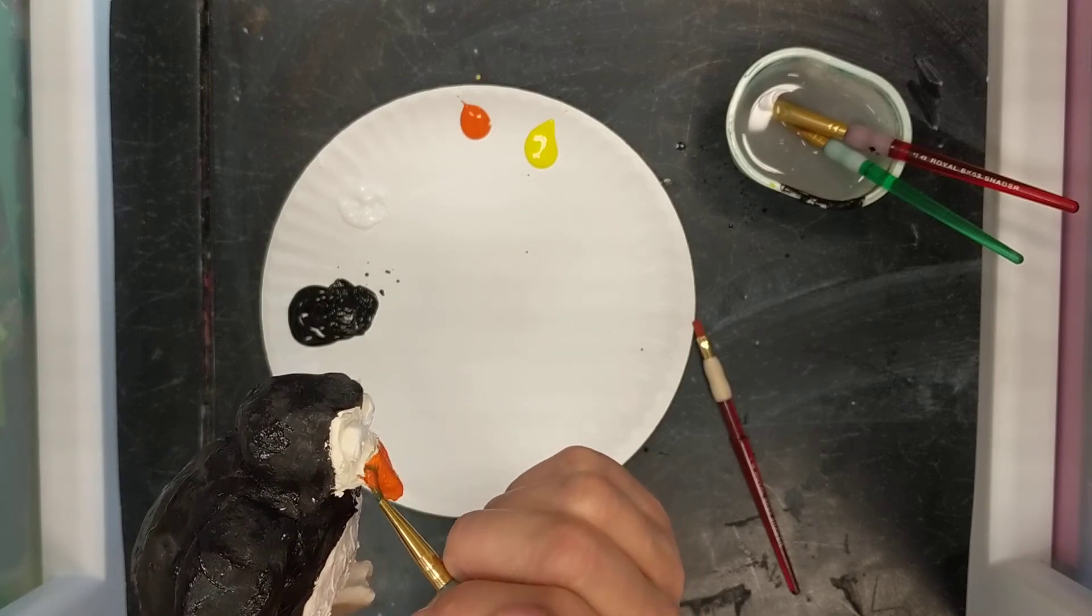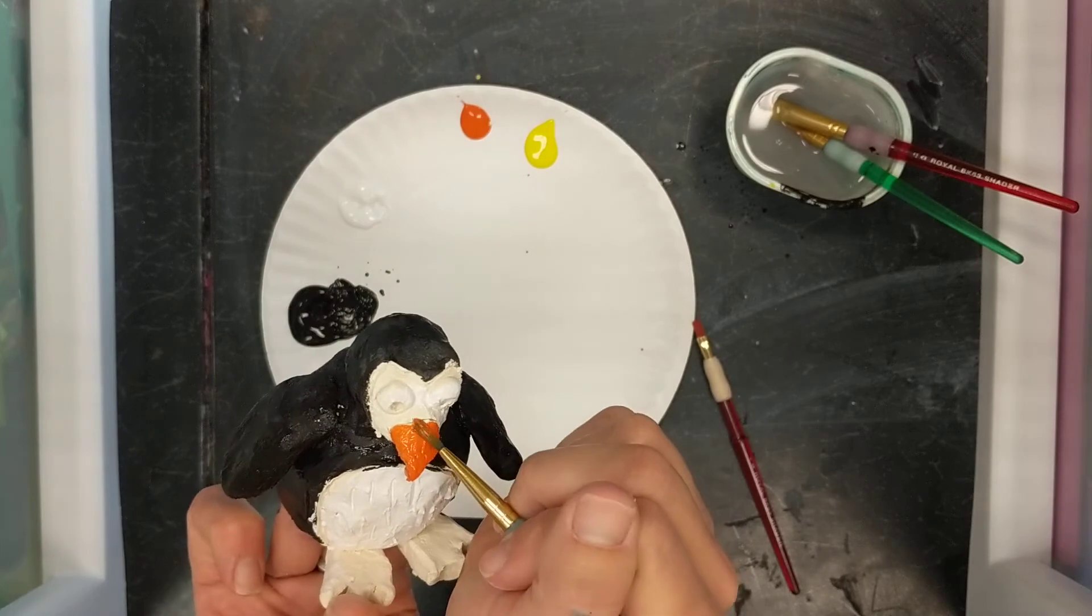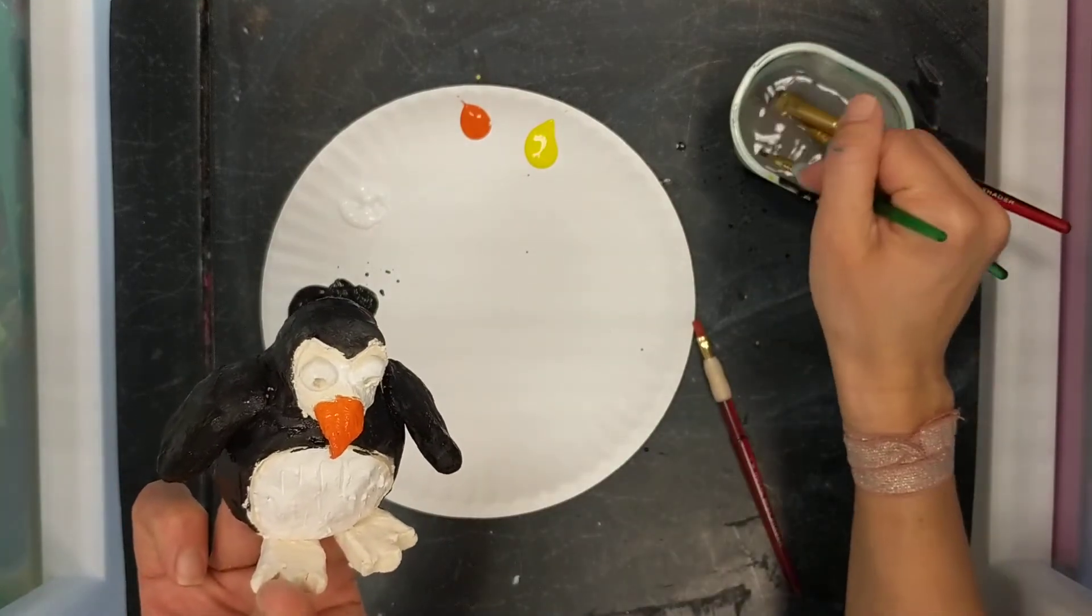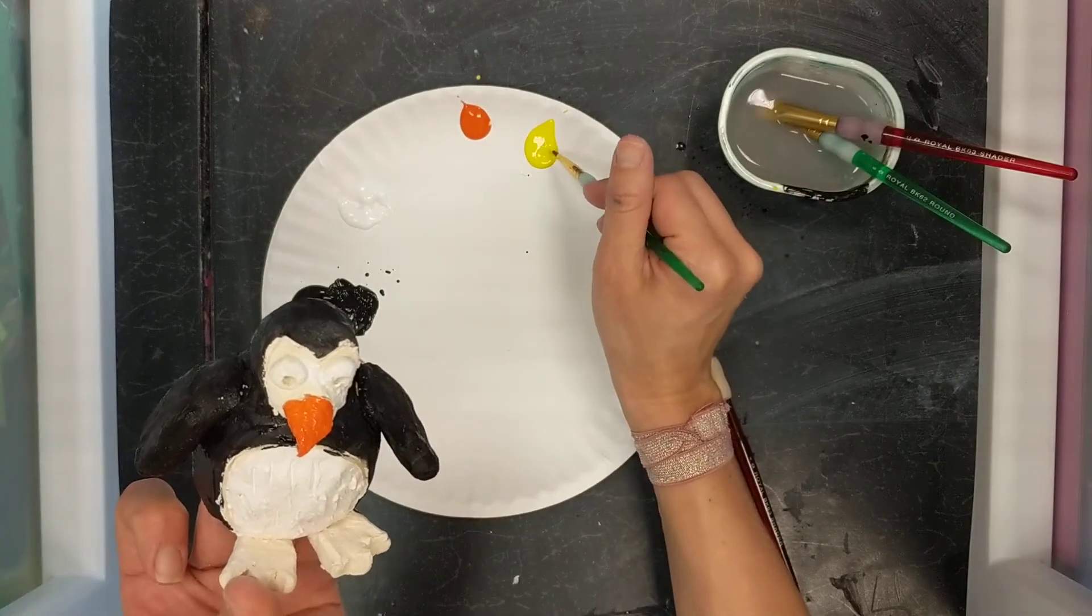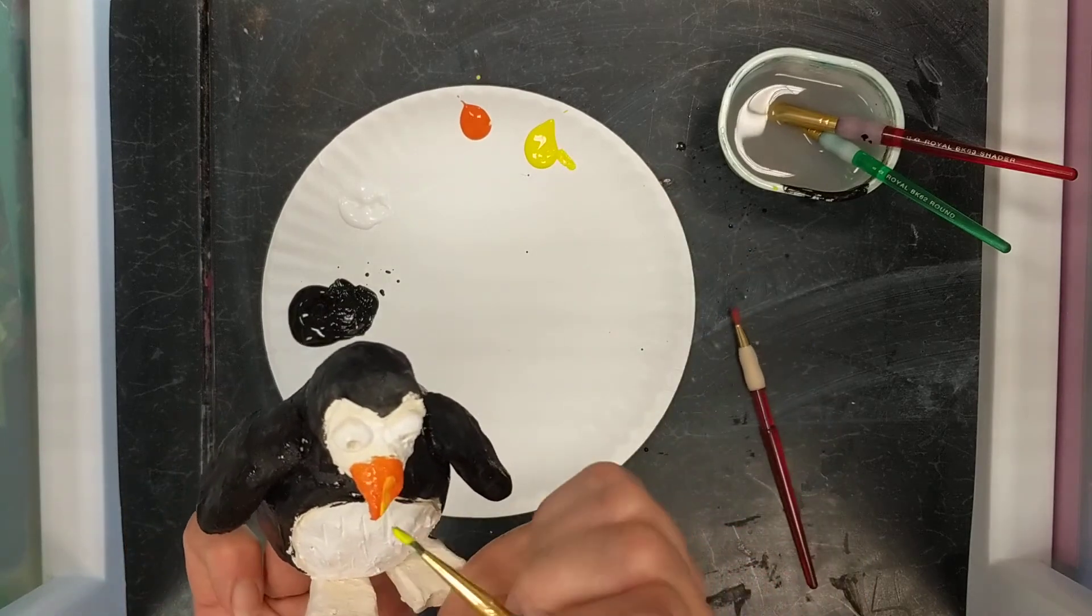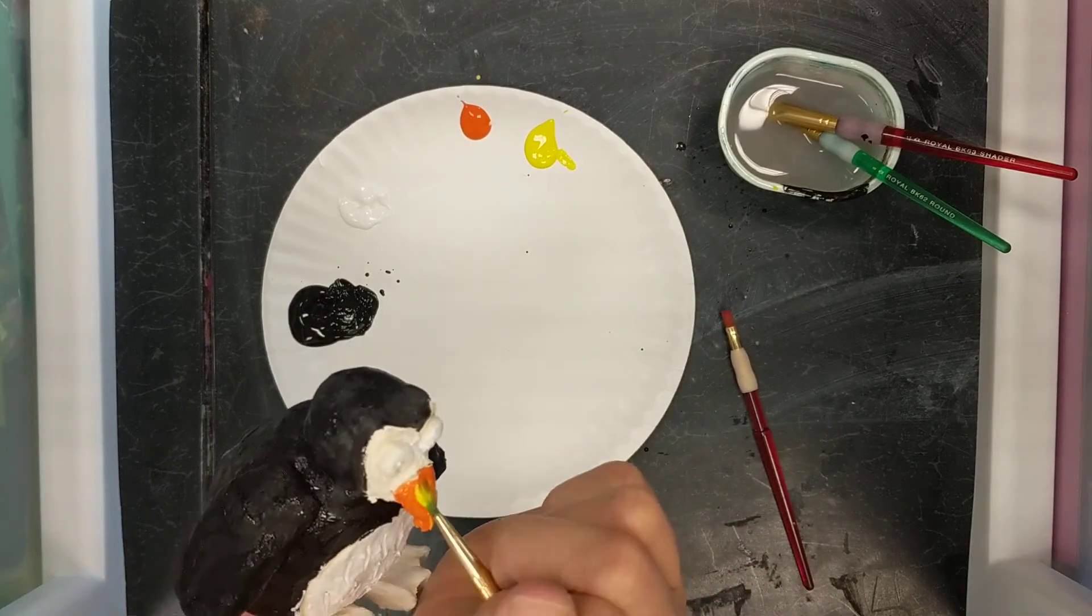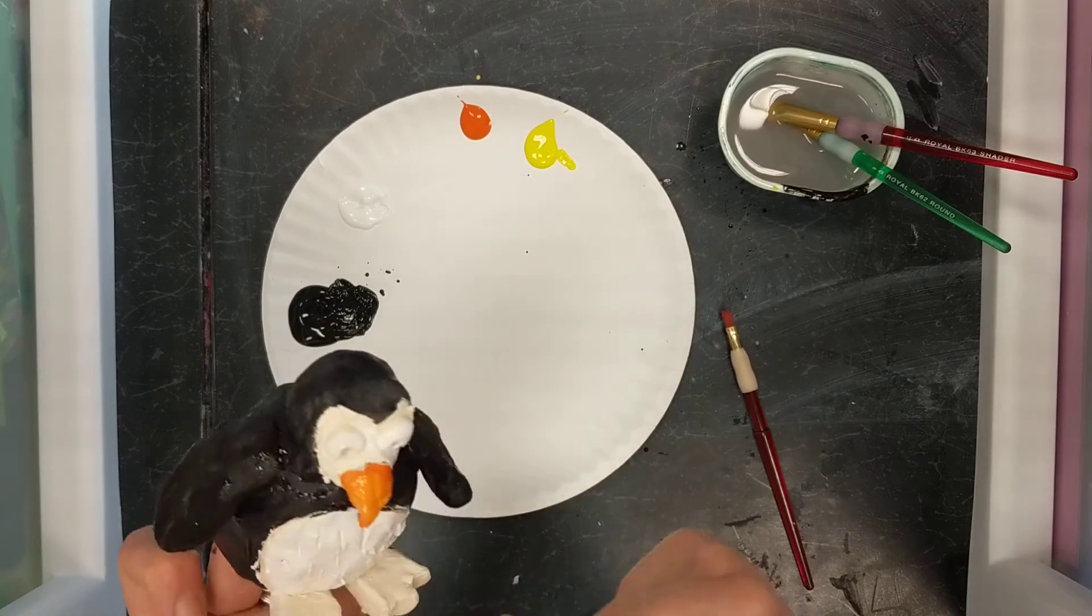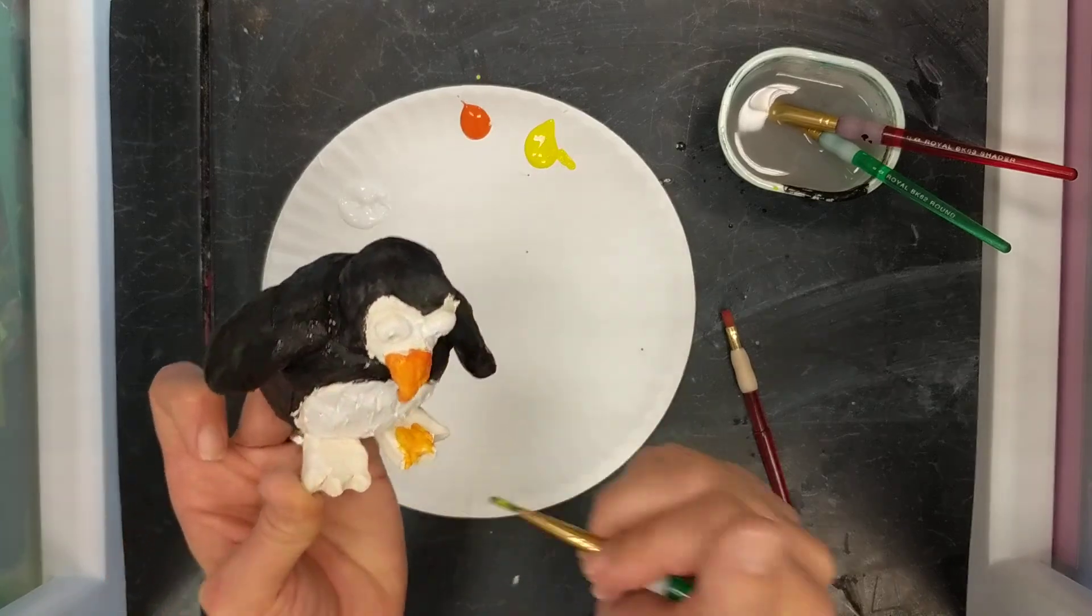Now it can be kind of fun to mix some colors. So you might want to, instead of just having an orange beak, maybe I want it to be orange-ish yellow. So I'm going to clean my brush, wipe, swipe a new color. Maybe I want some yellow mixing in with my beak. And I would use this on my feet too.